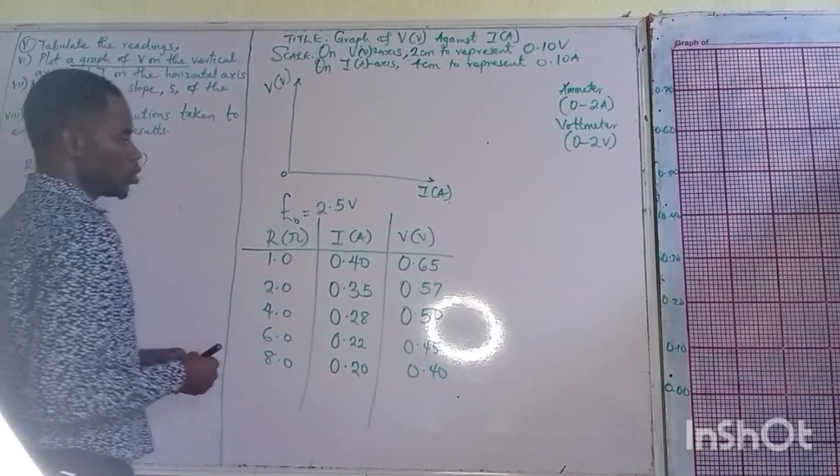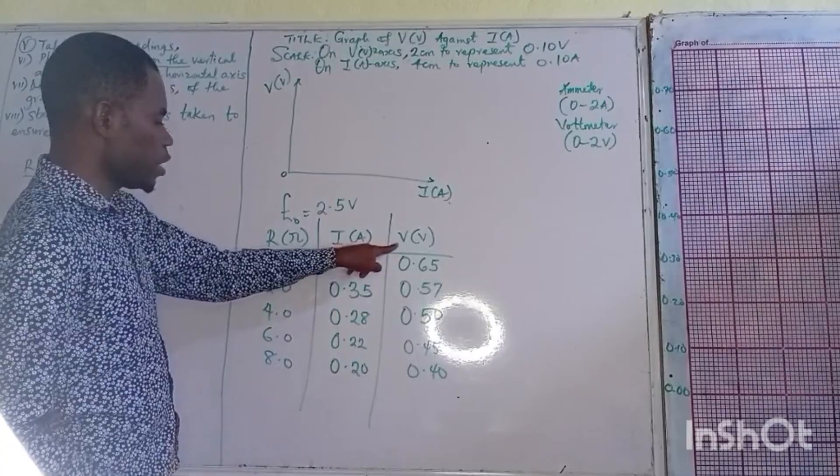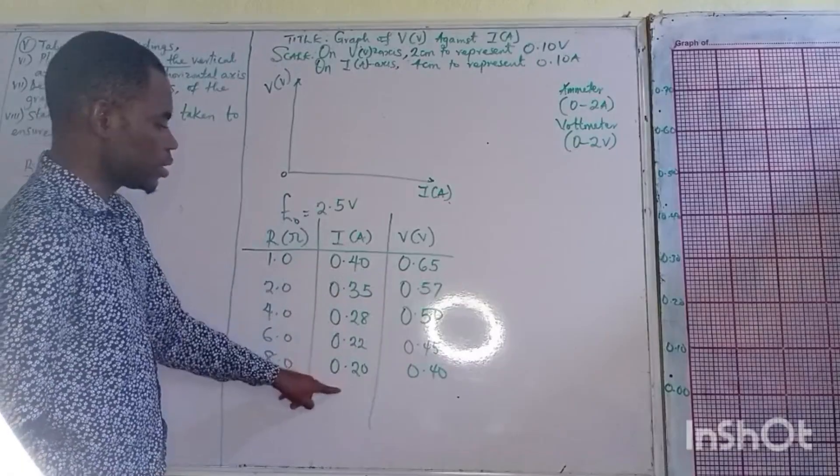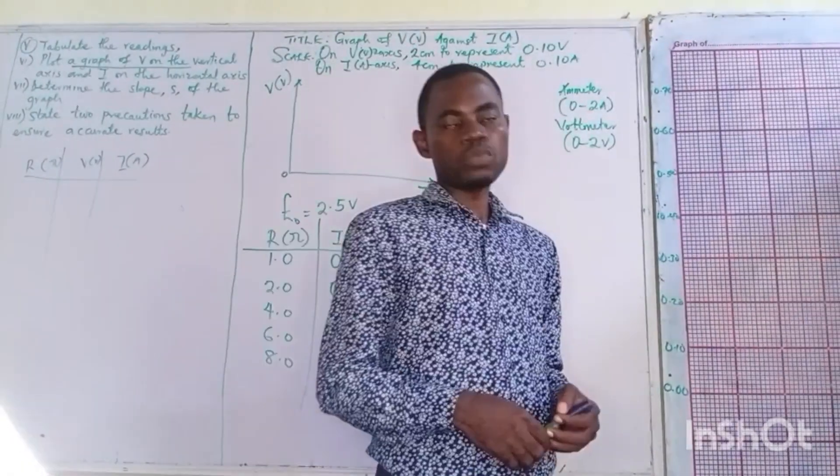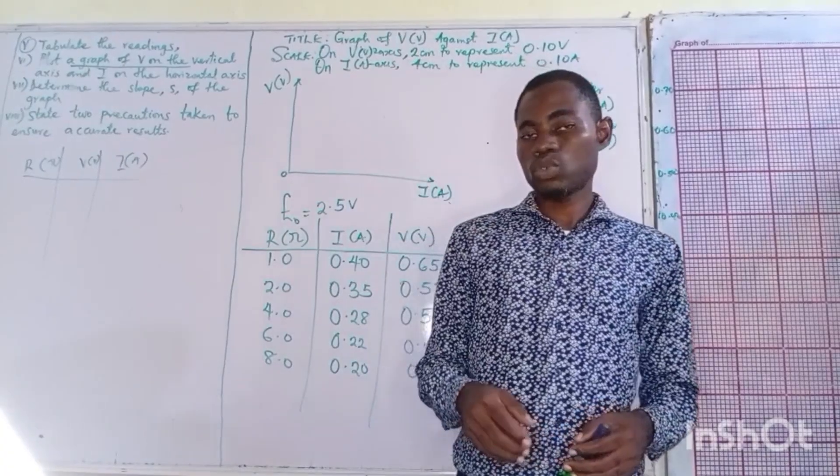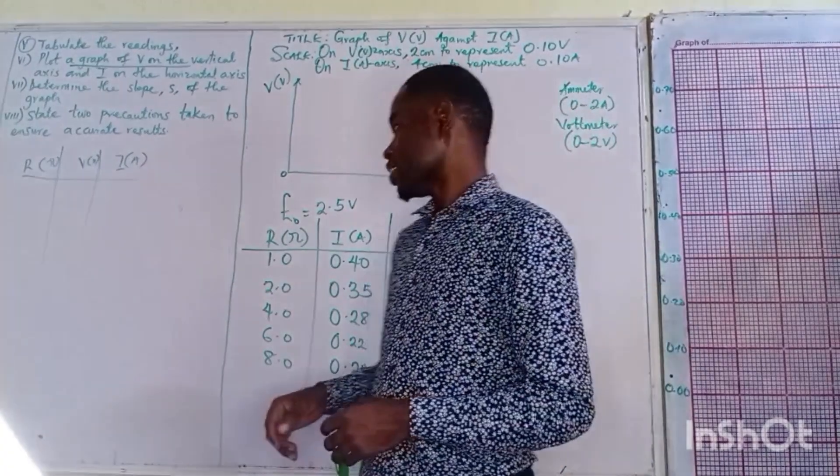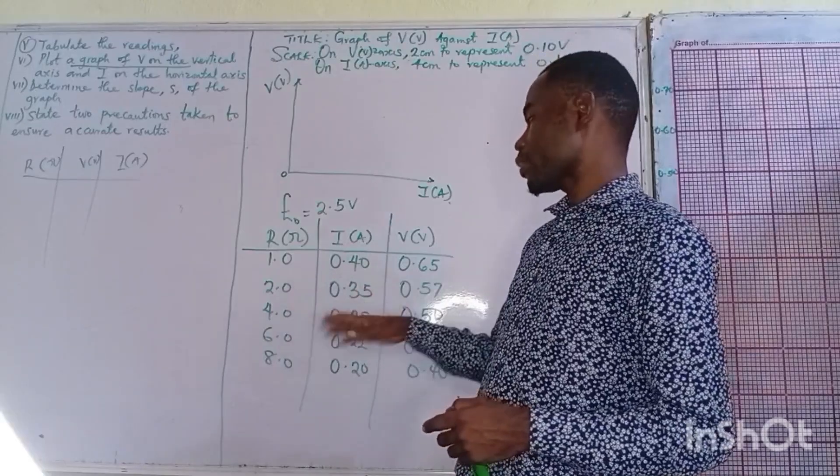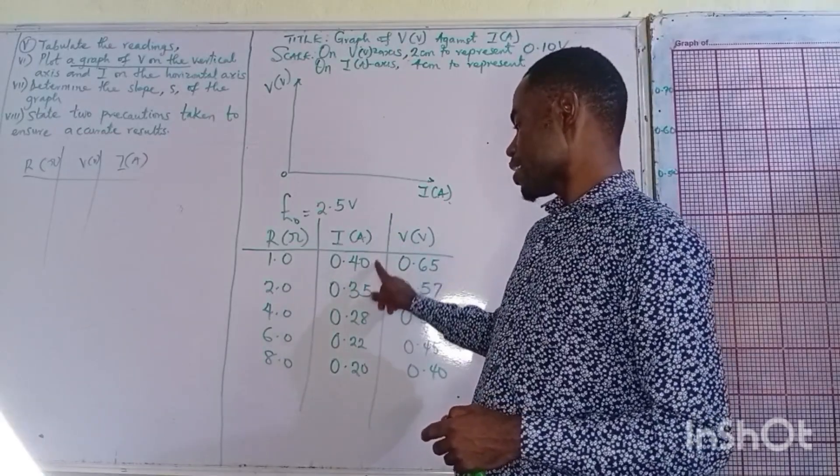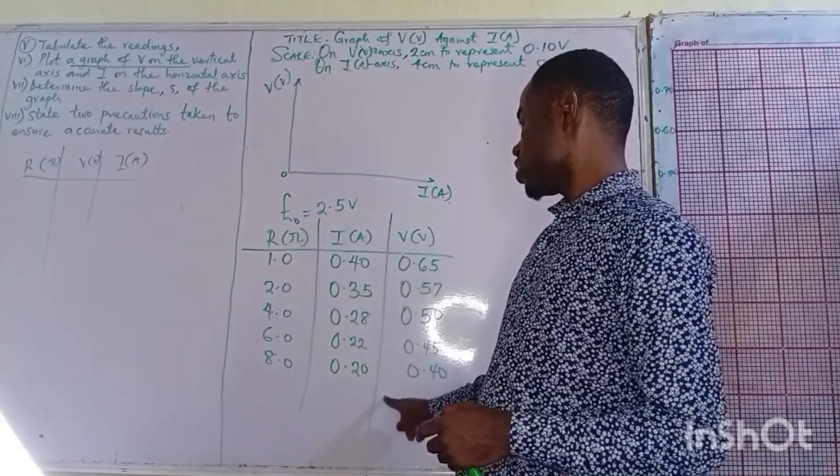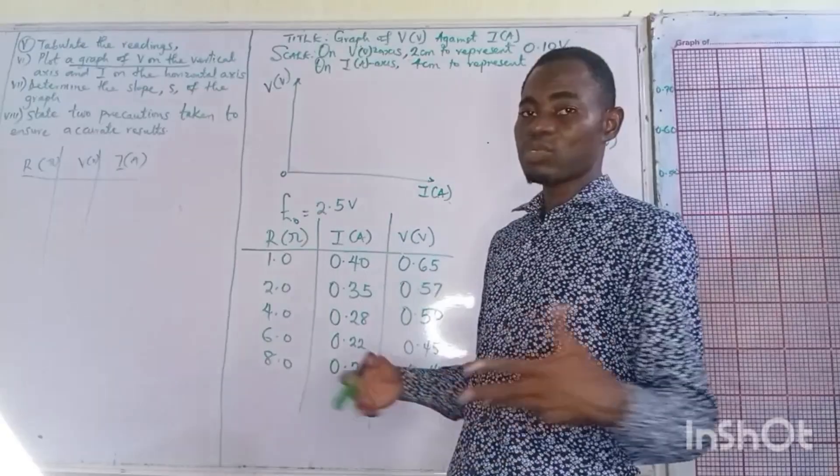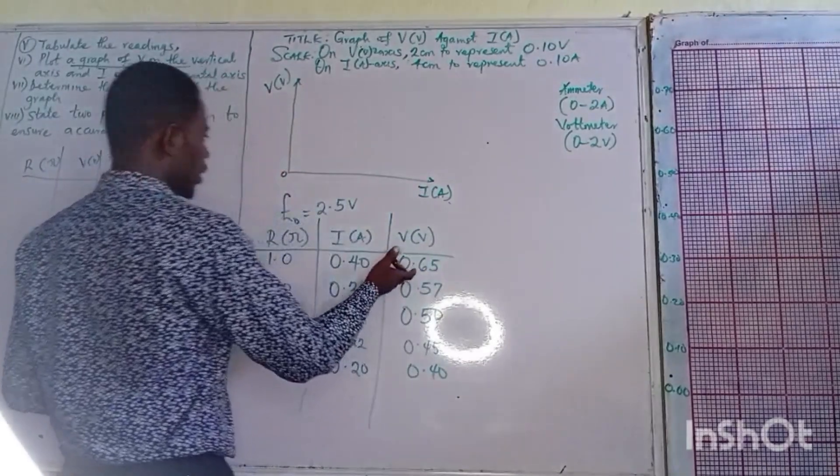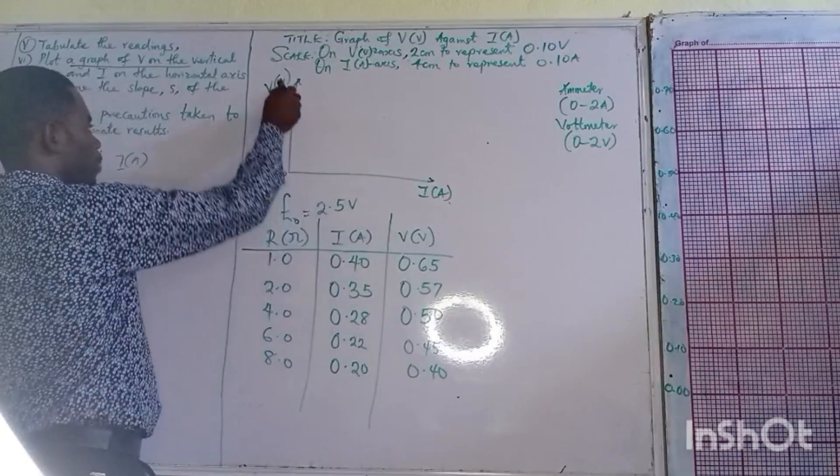My V is decreasing, my I is also decreasing. Ohm's law already working. Ohm's law states that the steady current passing through the metallic conductor is directly proportional to the potential difference, provided all other factors are constant. As I is decreasing, the V also is decreasing. Definitely we are going to have a perfect graph.